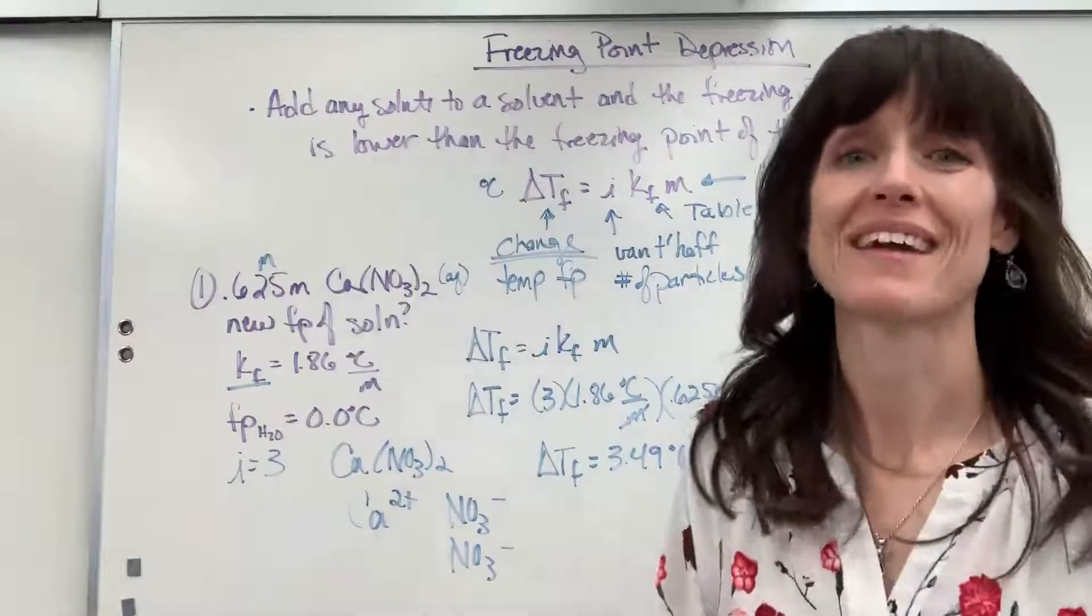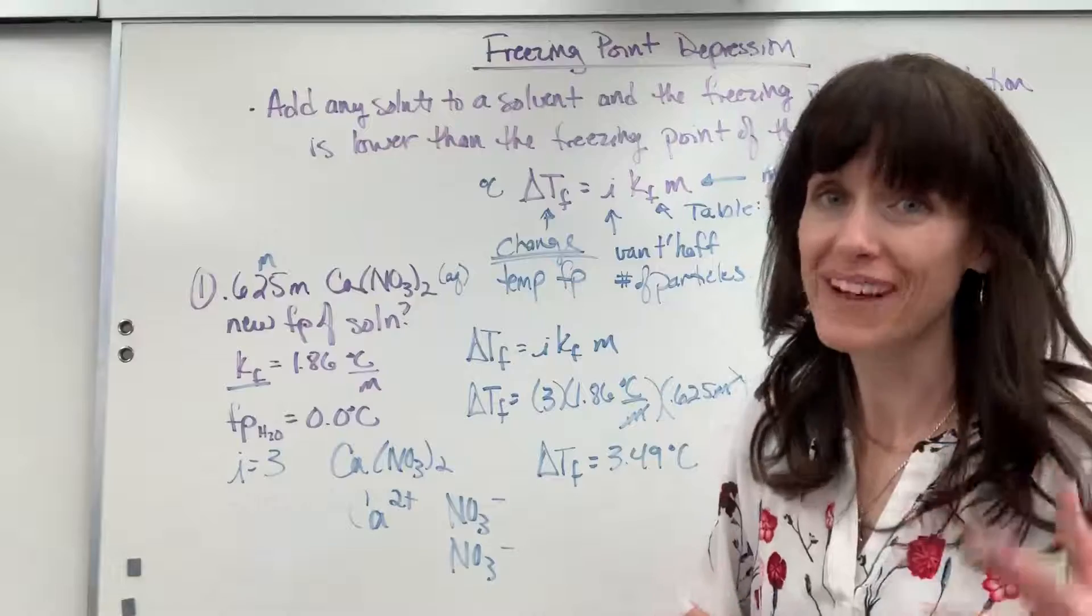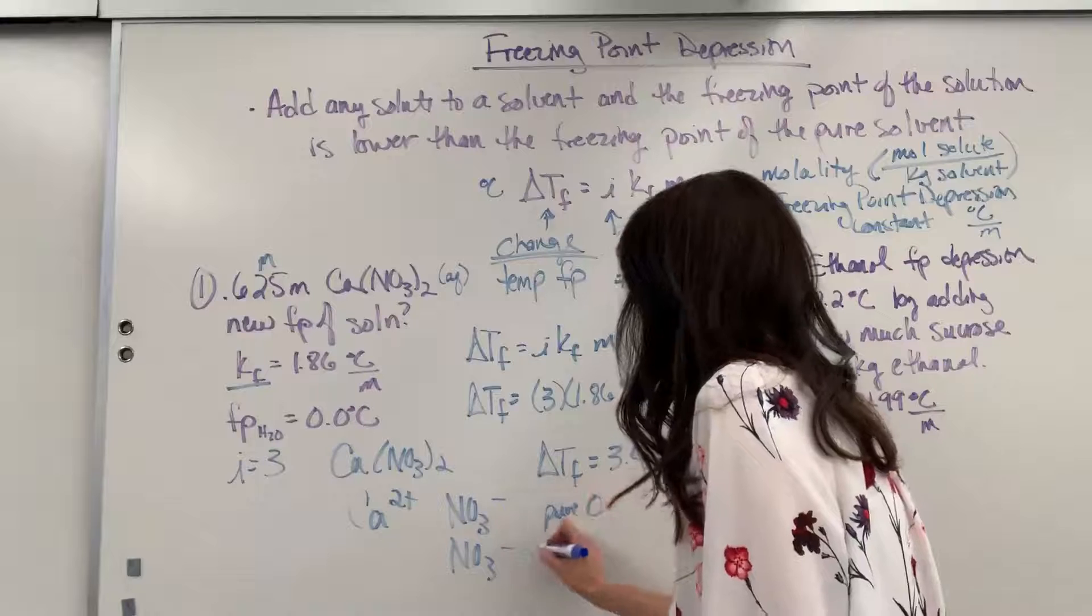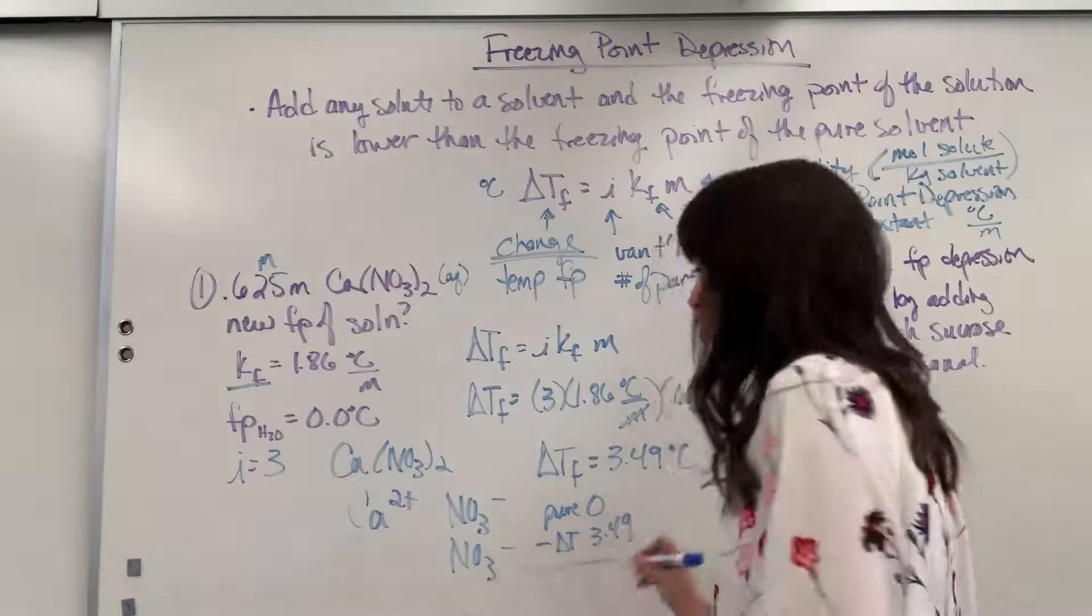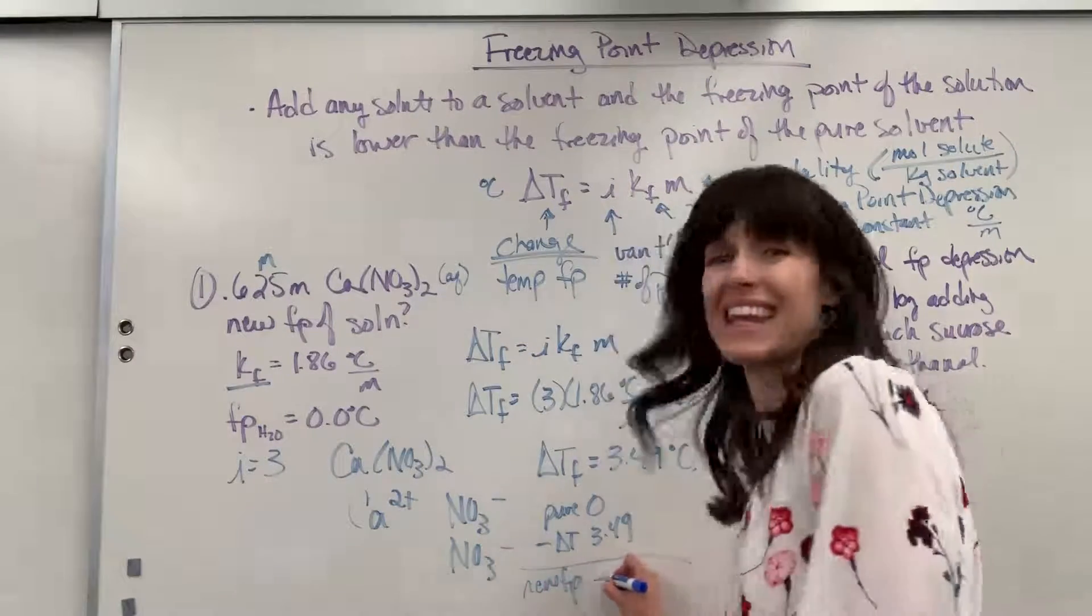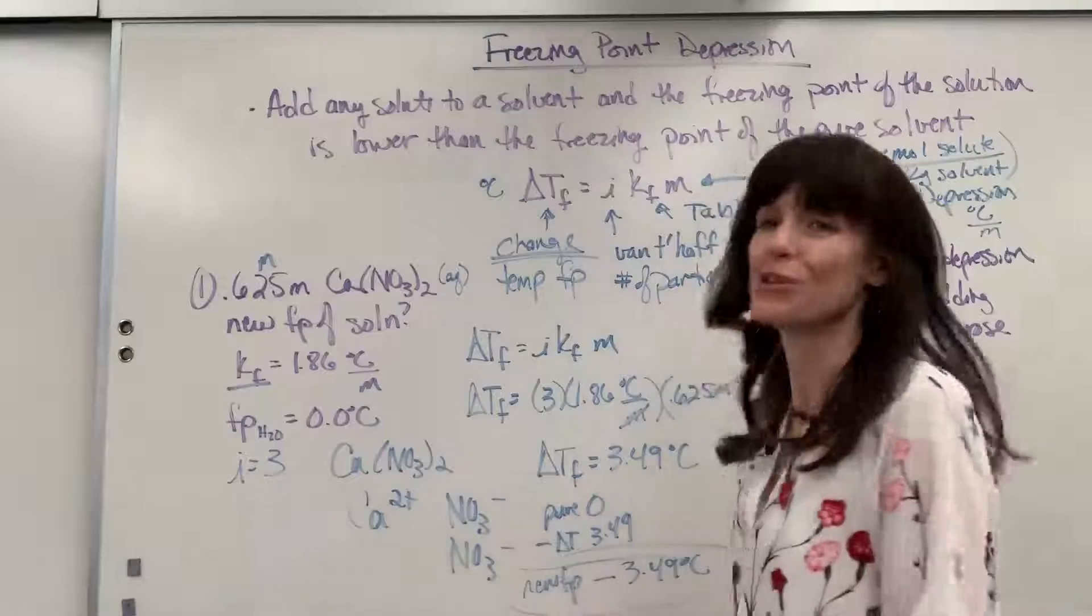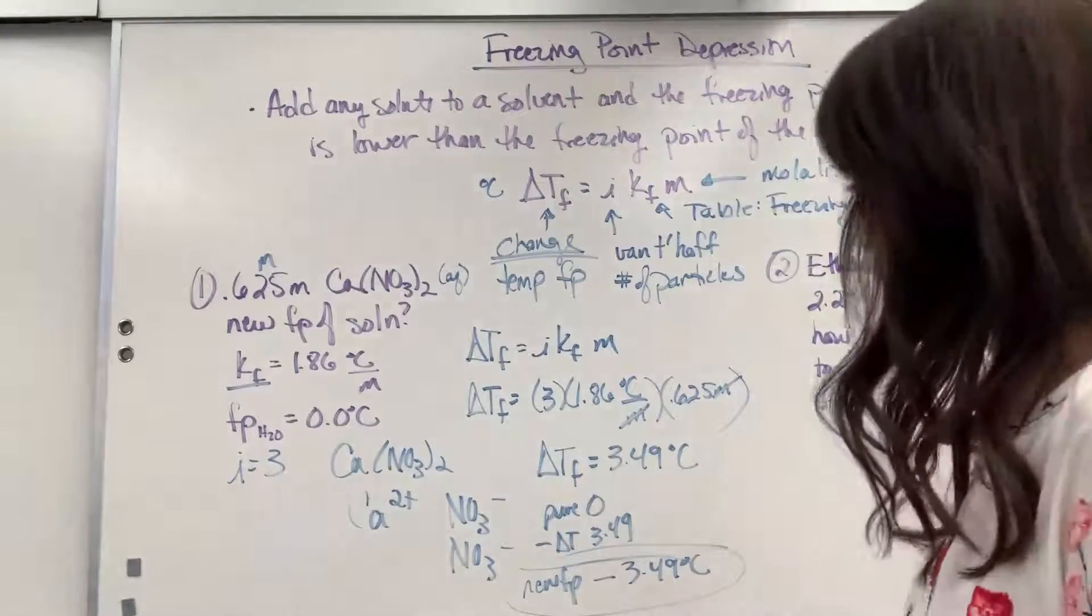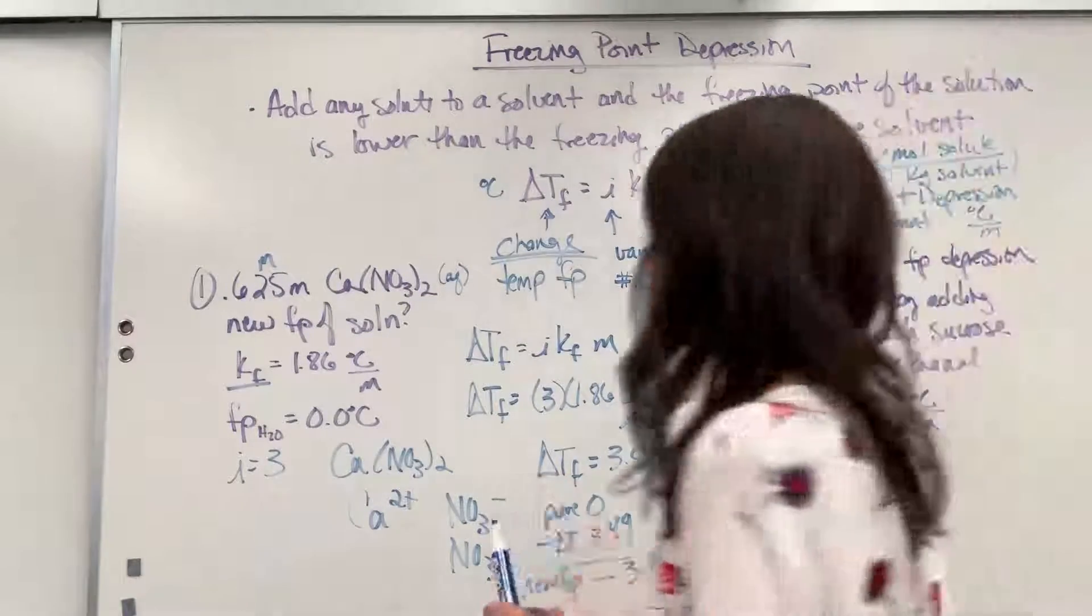Now remember, that's not my answer. That's the change in temperature. We want to know the new final temperature. So you start from the pure temperature. Zero degrees minus the change in temperature 3.49. And our new freezing point. So I'll put new freezing point is going to be negative 3.49 degrees C. So you subtract it from the pure freezing point. So there's the first question. And that's going to be a pretty straightforward question.